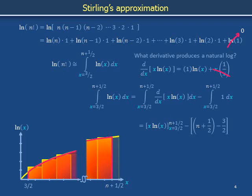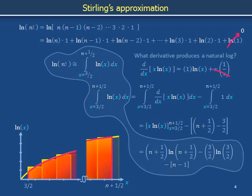The second integral contains merely the constant 1 and yields the difference quantity n plus 1/2 minus 3/2. After explicitly substituting the endpoints, we find that the integral from x equals 3/2 to n plus 1/2 of the natural log of x dx equals the quantity n plus 1/2 times natural log of n plus 1/2, minus 3/2 times natural log of 3/2, minus the quantity n minus 1. This is the red area under the plot of the natural log of x, and thus an approximation to the total area of the golden rectangles, which is the natural log of n factorial.